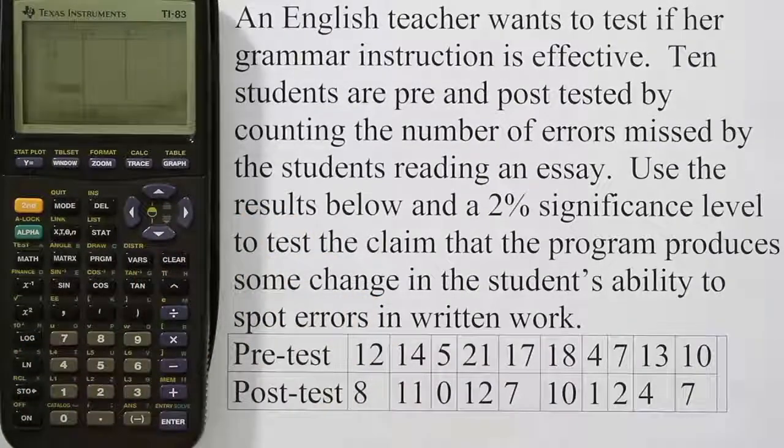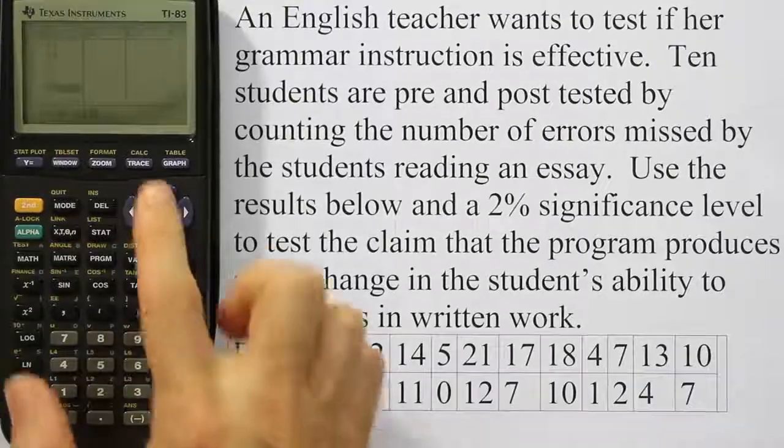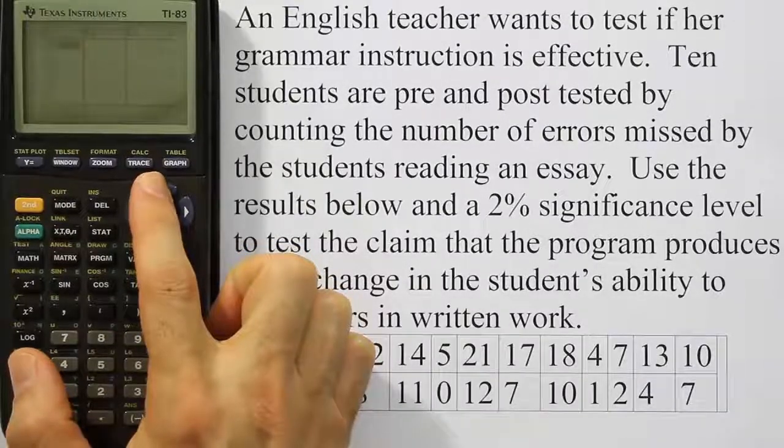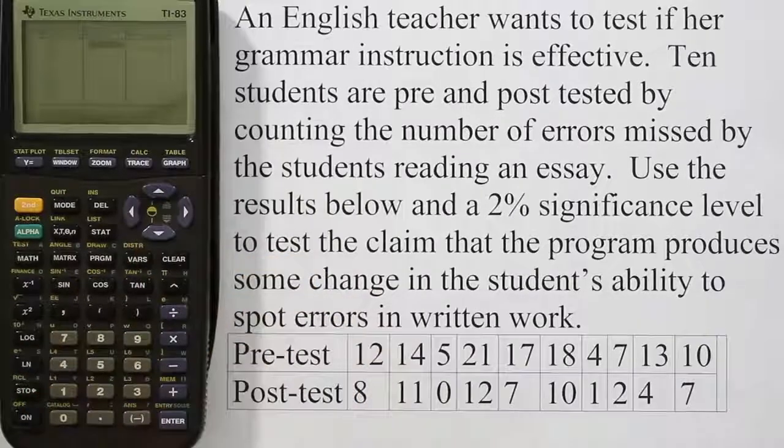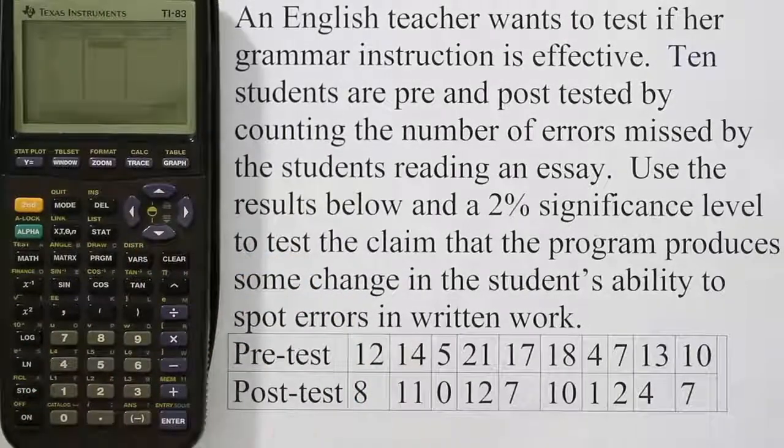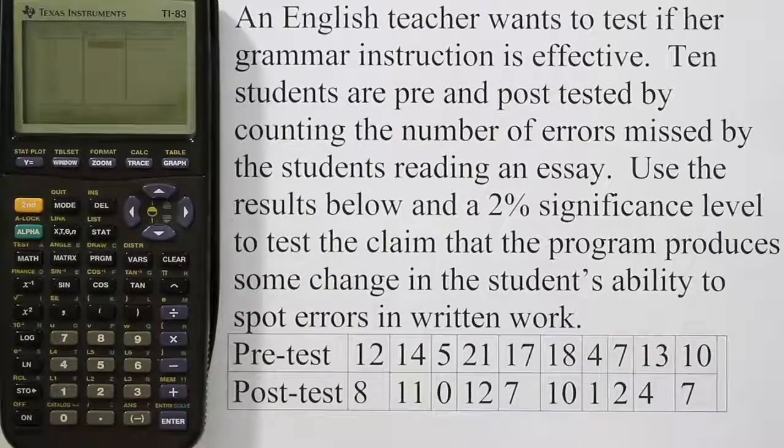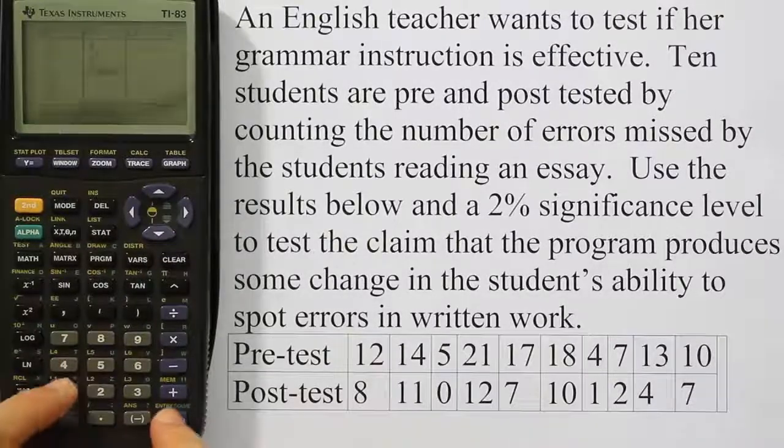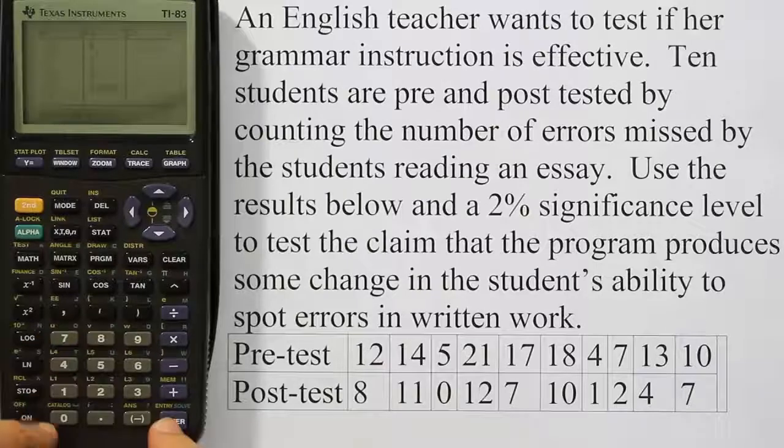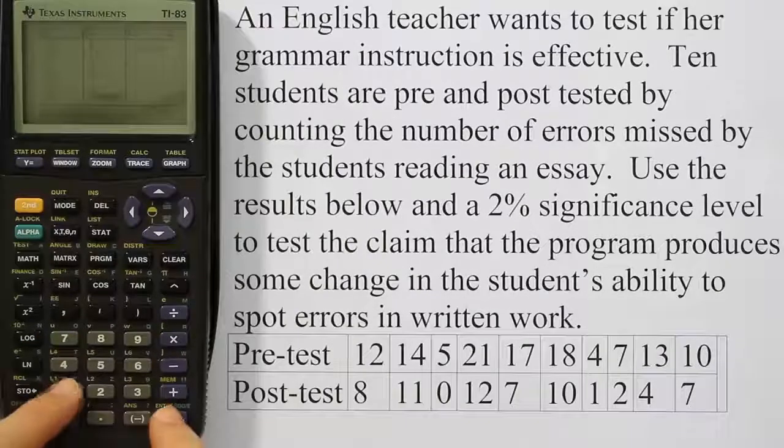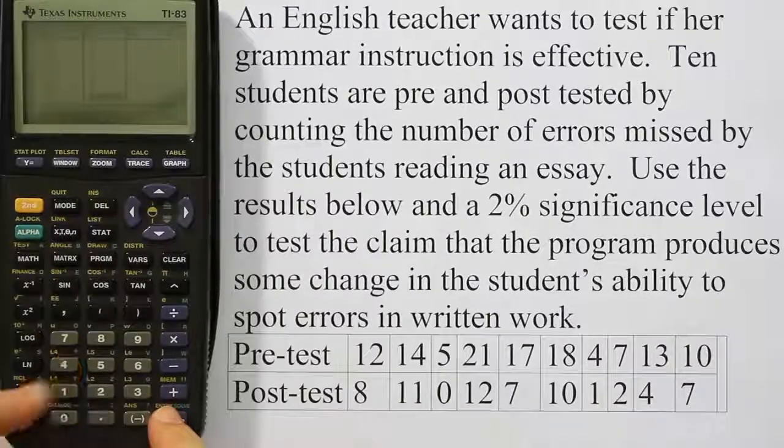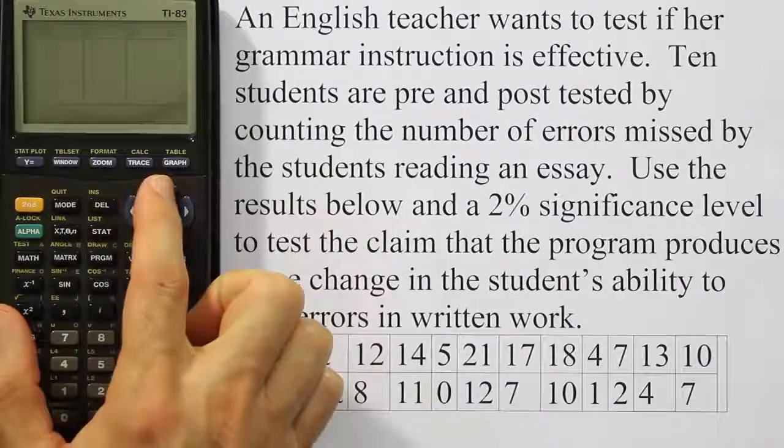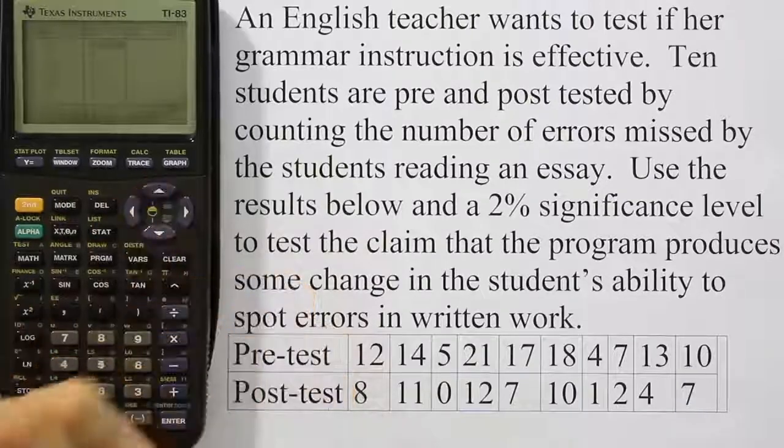When we check we do have 10 numbers and a quick glance indicates that we haven't typed anything in incorrectly. Now let's type the next list in. The post-test goes in L2, so we're going to do 8, 11, 0, 12, 7, 10, 1, 2, 4, and 7. Scrolling through the list to make sure I didn't make any typos, all that's done.